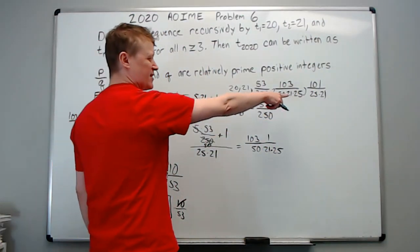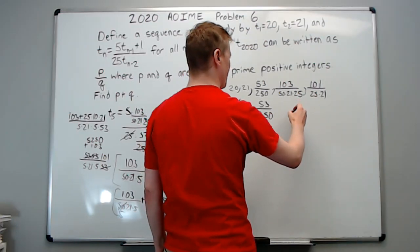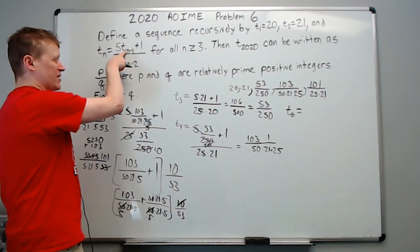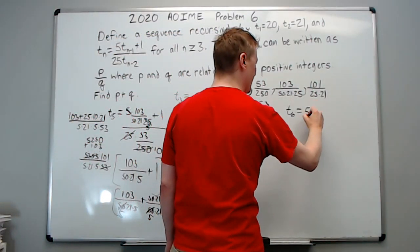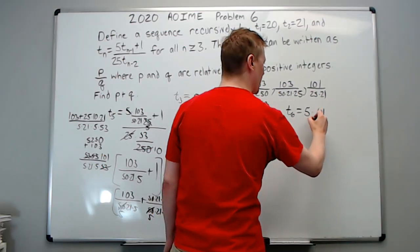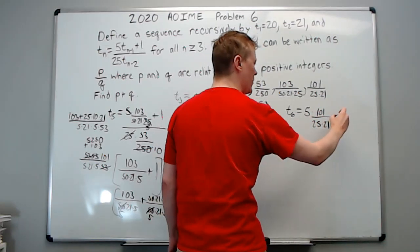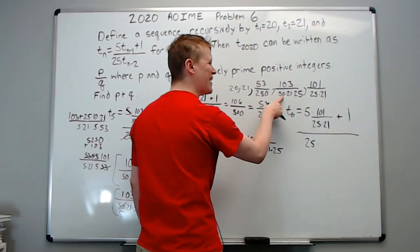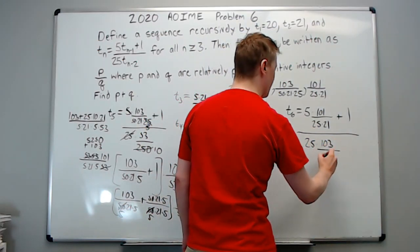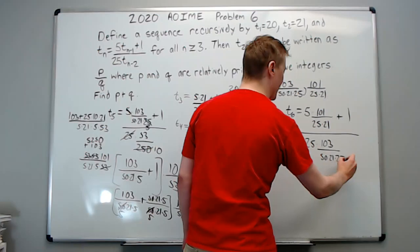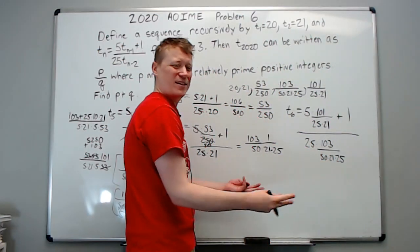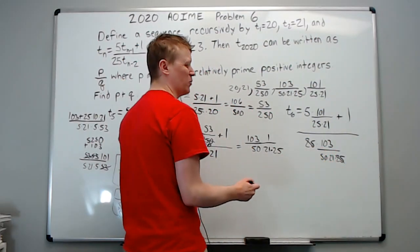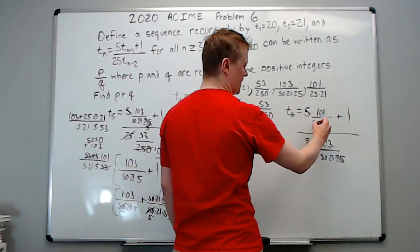Now let's do t₆, and I'll move to this part of the board. t₆ = 5 times the previous term plus 1 over 25 times the second previous term. So it's 5·(101 over 25·21) plus 1 over 25 times the second previous term, which is 103 over (50·21·25). See how much easier cancellations are when you don't multiply things out — the 5 cancels right away.